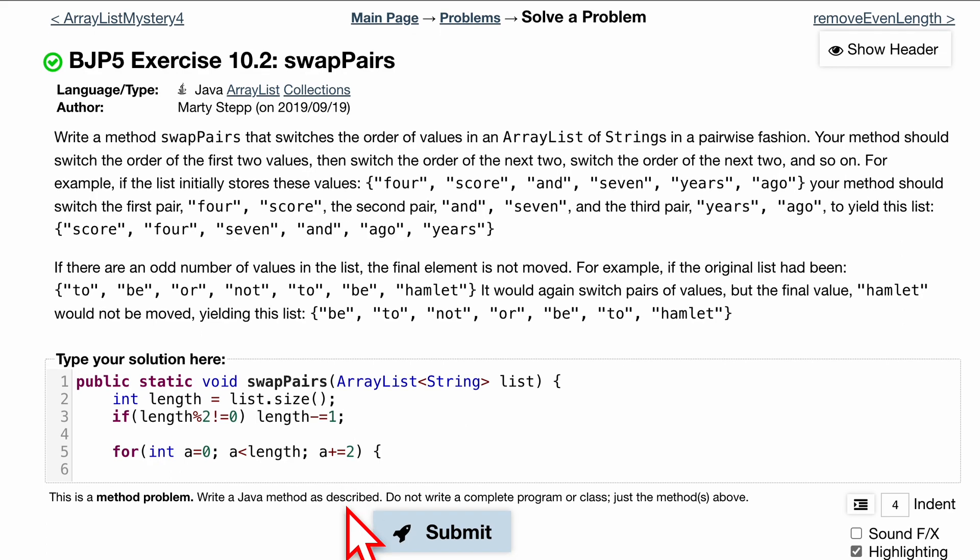Now inside of here, we want to do our swap. We're going to make a temporary variable called string temp, and we're going to set it equal to the current element at this index because we're going to switch it. So string temp is equal to list.get(a). So we're going to get the element here.